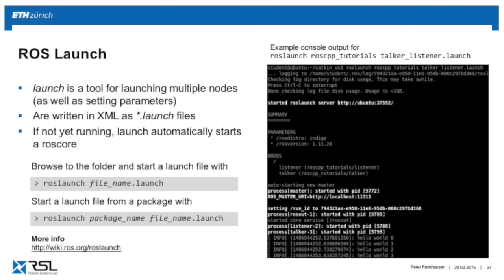To start a ROS launch file, type roslaunch and then the name of the launch file. If the launch file is associated with a ROS package, type roslaunch, the package name, and then the launch file name — it finds the file automatically. For example, for the talker and listener there exists a launch file: roslaunch roscpp_tutorials talker_listener.launch. This does the same work you did before, starting talker and listener together.